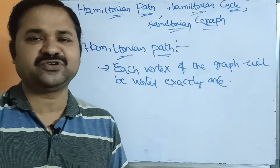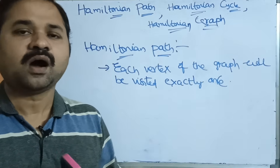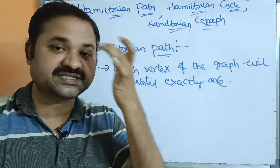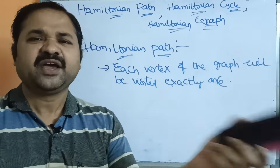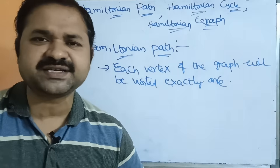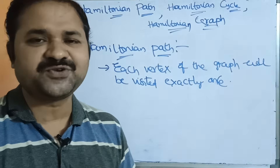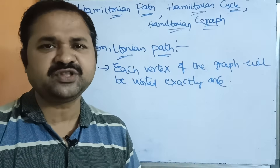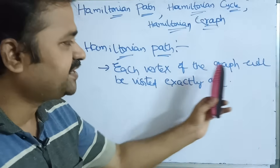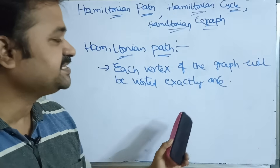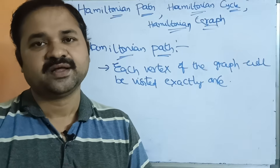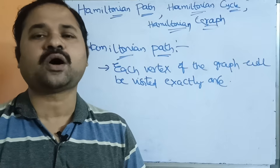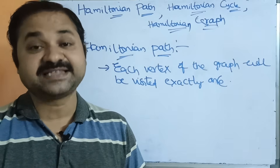An edge can be repeated — we should not worry about that. An edge can also be missing. If a graph contains five edges and only two, three, or four edges are covered, there is no problem. But each vertex of the graph will be visited exactly once. If a graph contains 10 vertices, we have to visit all 10 vertices exactly once.